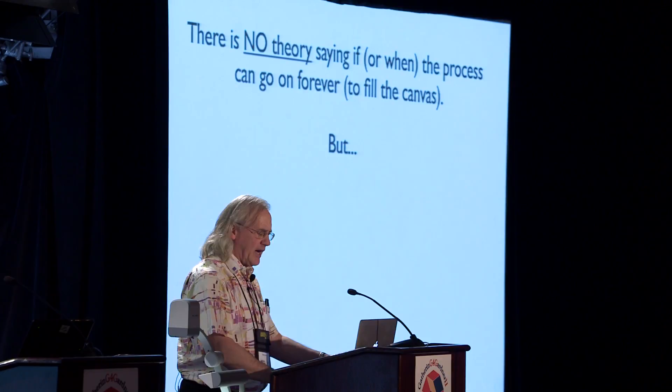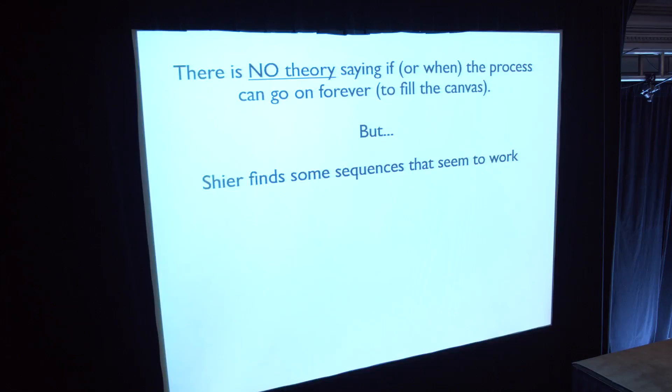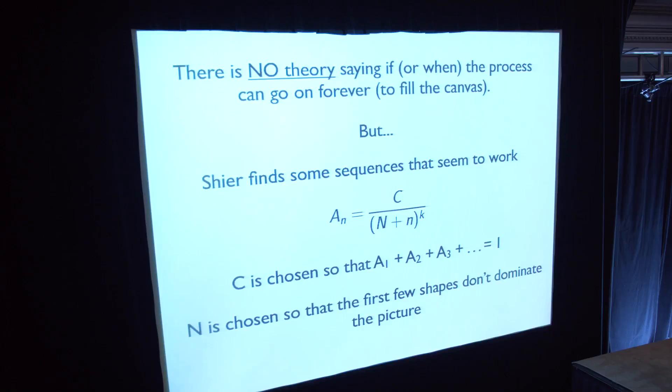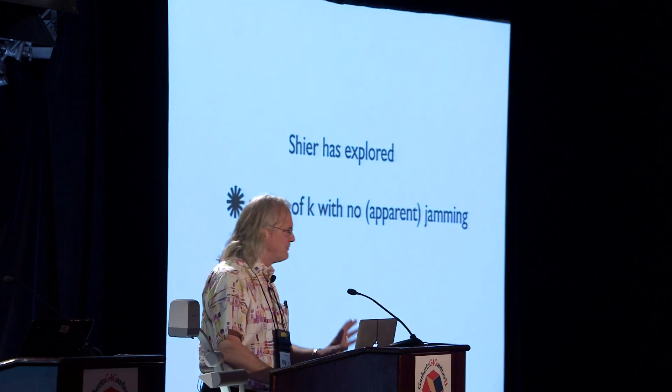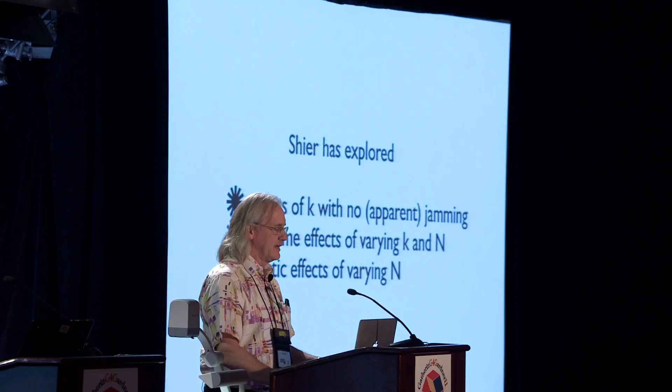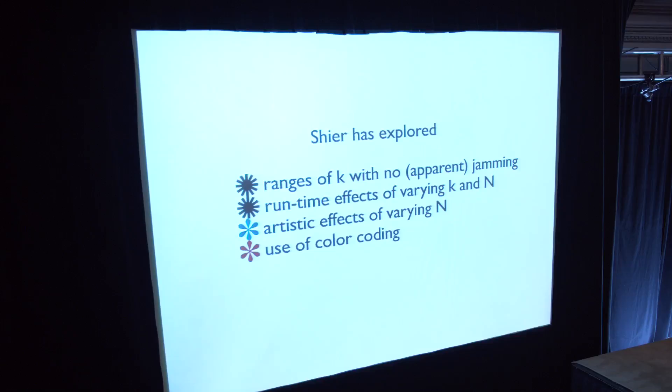Scheer finds some sequences that seem to work. The ones he uses are pretty much based on the Riemann zeta function, where C is chosen to have total area one, N is chosen for artistic reasons. The key parameter turns out to be K, which he allows to vary to get different artistic effects. So he explores ranges that seem to have no jamming. He gets runtime effects with varying K and N, artistic effects by varying the size of the biggest piece, and uses different things with color coding.